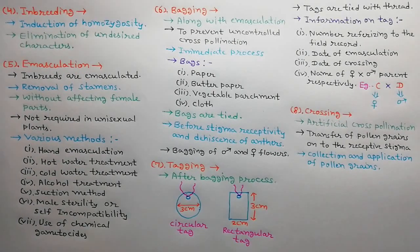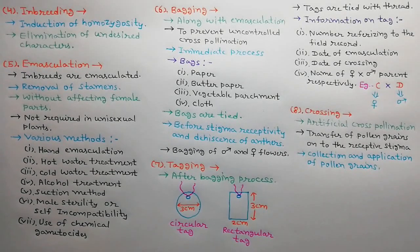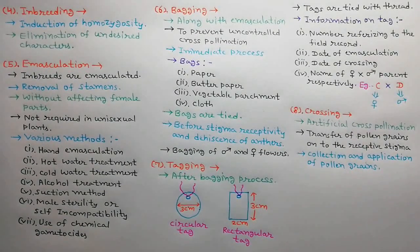Pollen grains are collected in petri dishes for wheat, cotton, etc. or in paper bags for maize and applied to the receptive stigmas with the help of a camel hair brush, piece of paper, toothpick, or forceps.